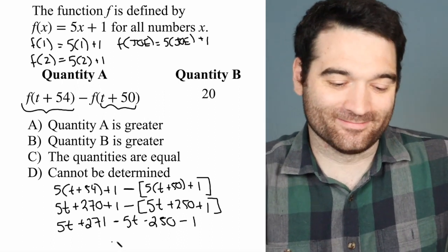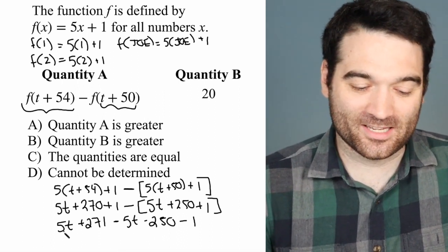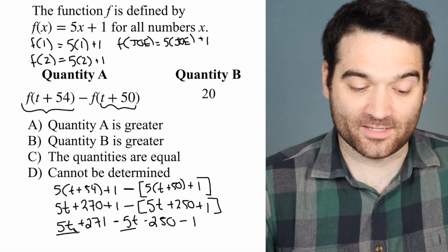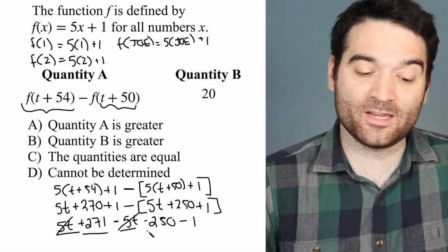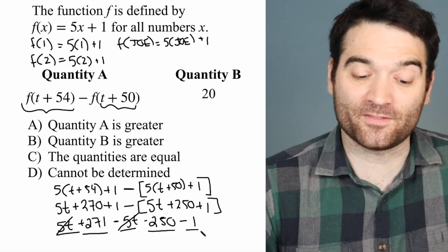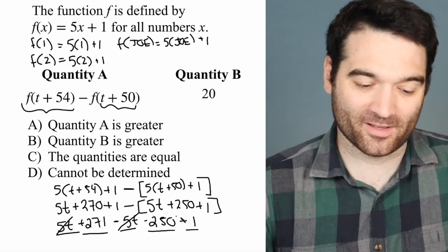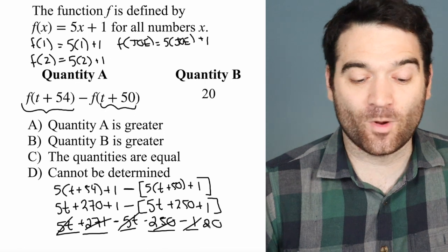And then as we can kind of see where this is going, this is 5t minus 5t, so that goes away. 271 minus 250 minus 1, if you plug that into your calculator, comes out to 20.